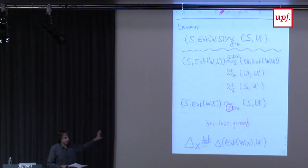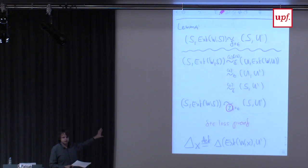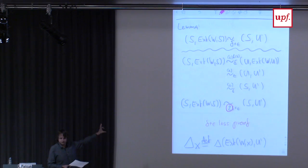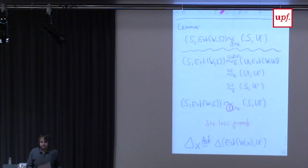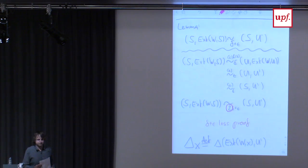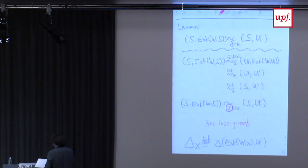This went much faster than I expected. Any questions before we go to the application of alternating extraction, which will be leakage resilient cryptography? Okay, let's go to leakage resilient crypto.